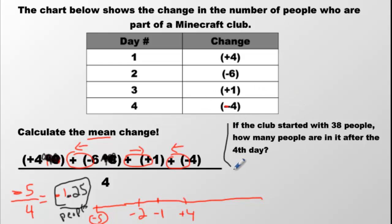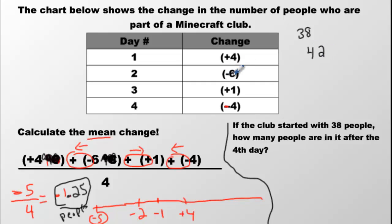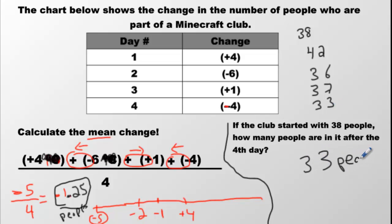Now if the club started with 38 people, how many people are in it after the fourth day? On the first day there's 38. Then four people joined, so now we have 42. Then six people left, so now we have 36. Then one person joined, so now we have 37. Then four people left — now we have 33. So there are 33 people after the fourth day.